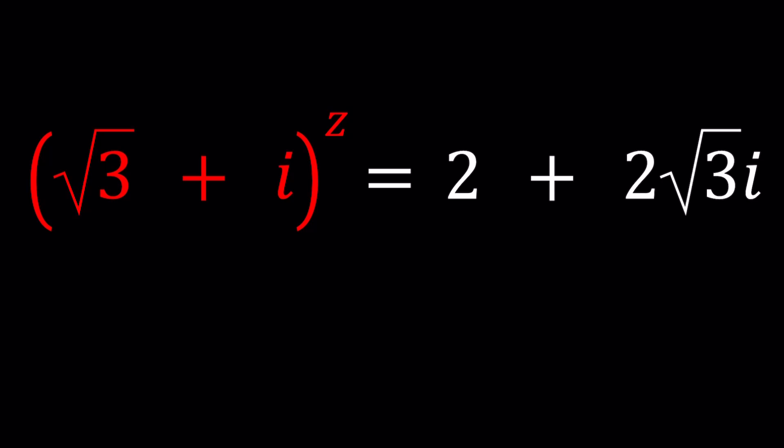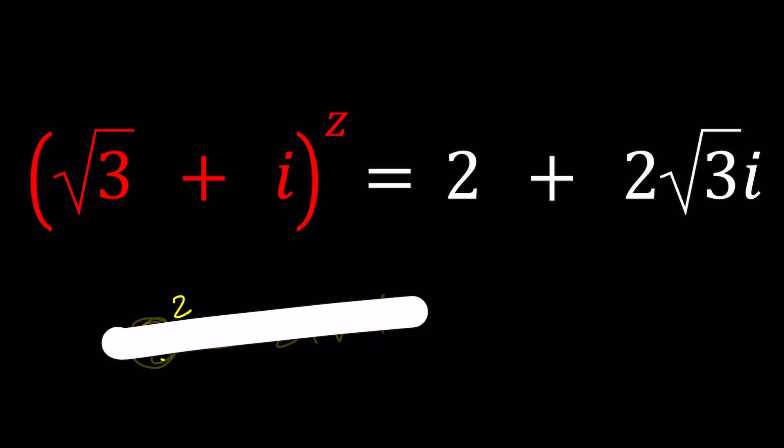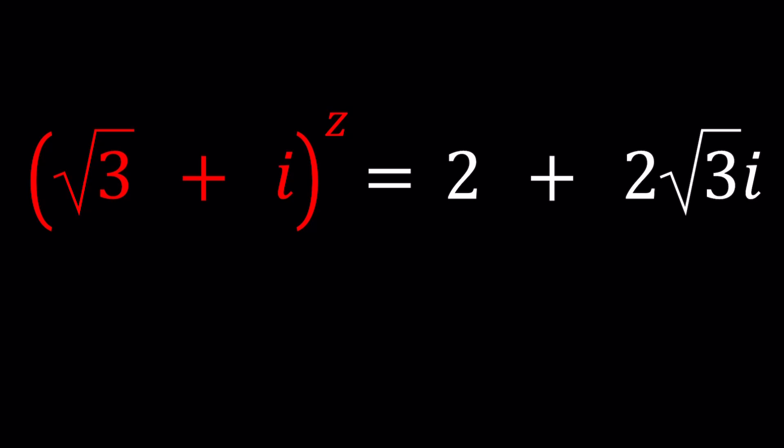If they told us z to the power some number equals this, you could easily find z because z would be the base. But when z is the exponent, you have an exponential function. And exponential functions are crazy, especially the complex exponential. So there's a couple different ways to go about it.